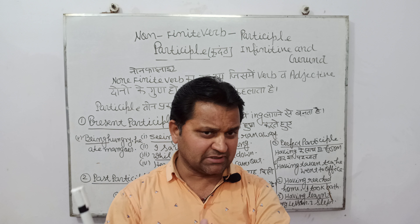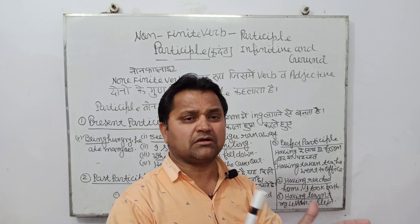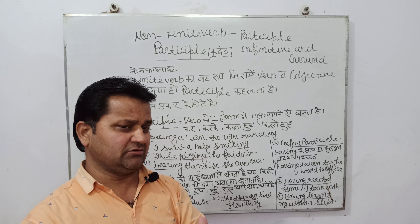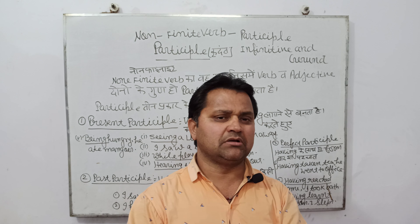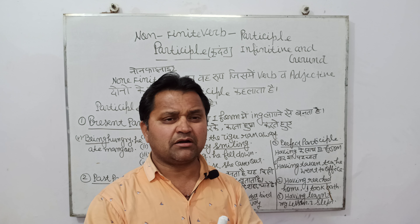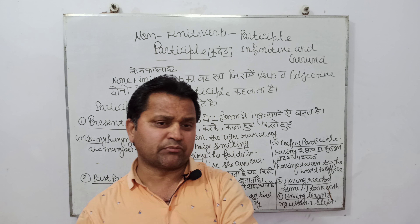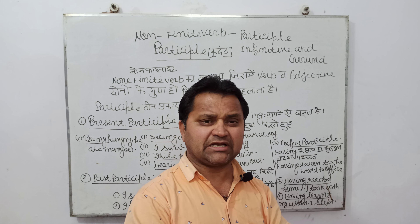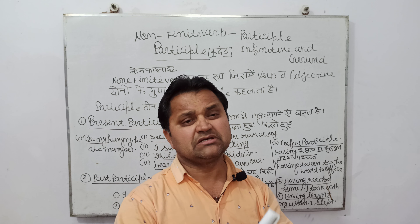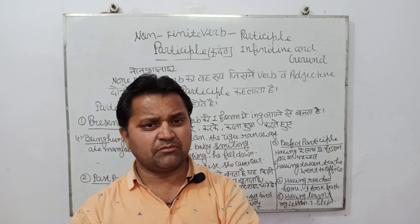Ek baar phir dekh lete hain — present participle: verb ki first form mein 'ing' lagane se present participle banta hai, aur iske Hindi vaakyon mein kar, karke, karta hua, karte hue aate hain. Turning to the right, you will reach the college — daayein mud kar tum college pahunchoge. Is vakya mein 'turning' jo hai, wo present participle hai. Past participle mein wo verb ki third form se banta hai aur kisi noun ki dasha ko darsata hai.